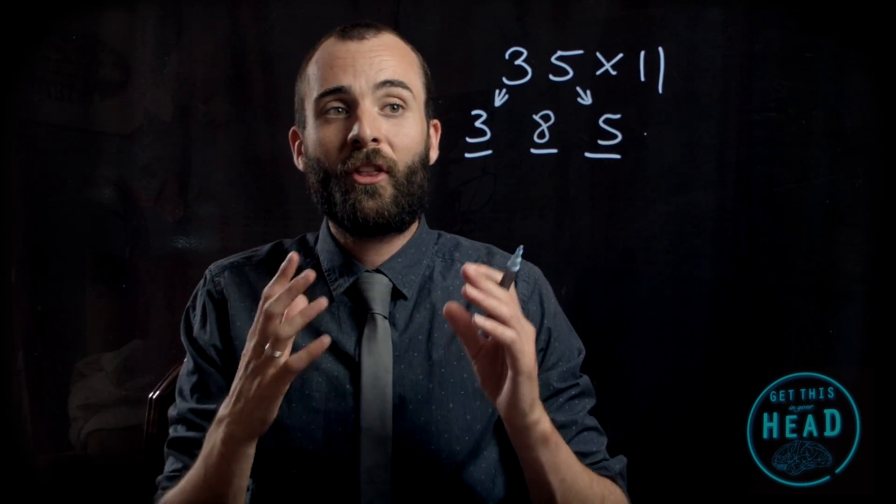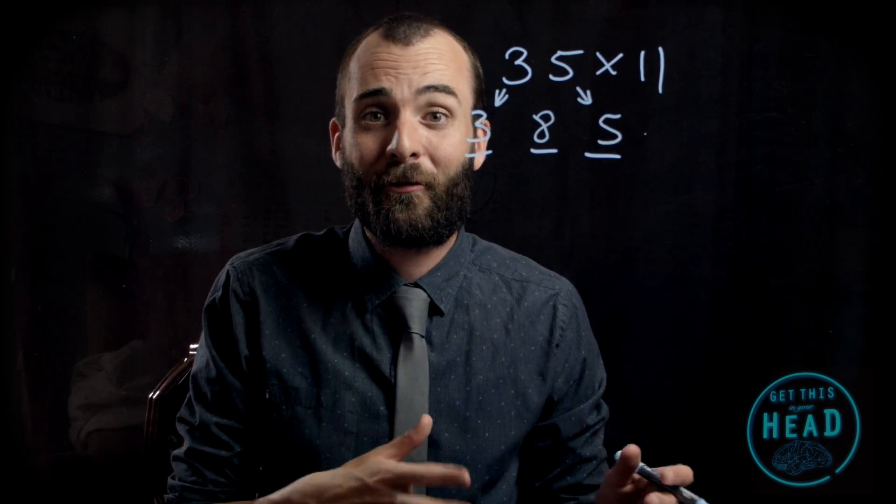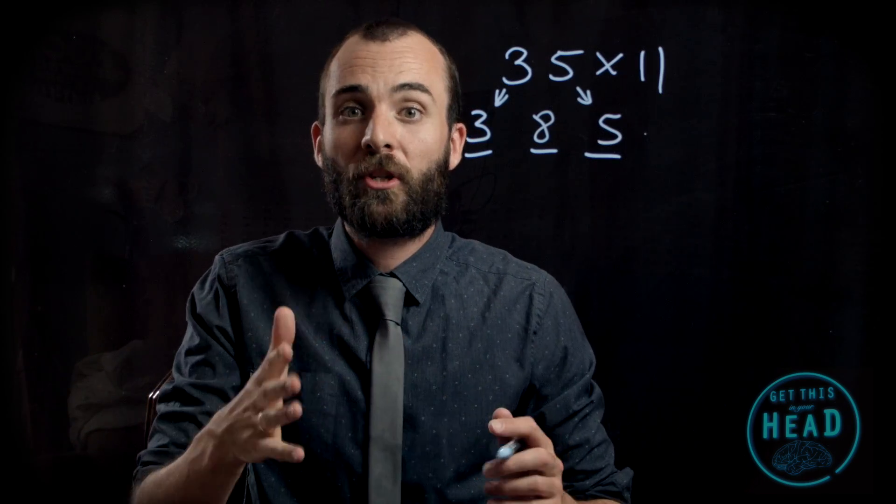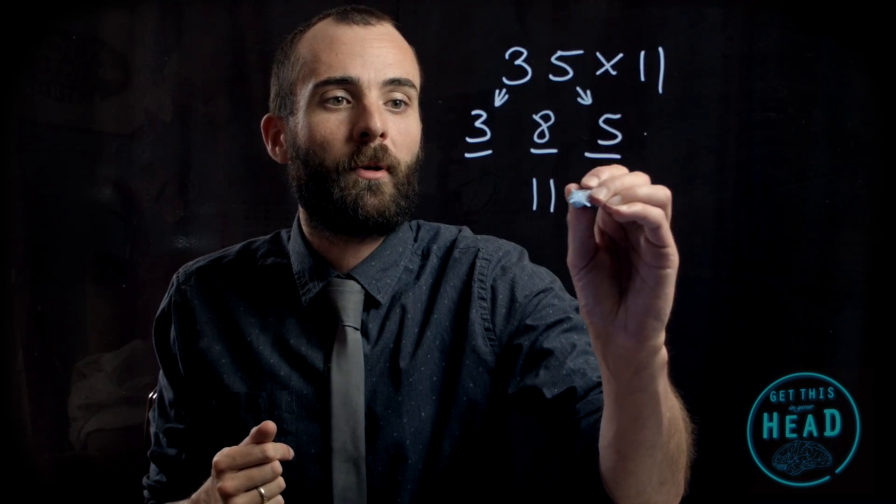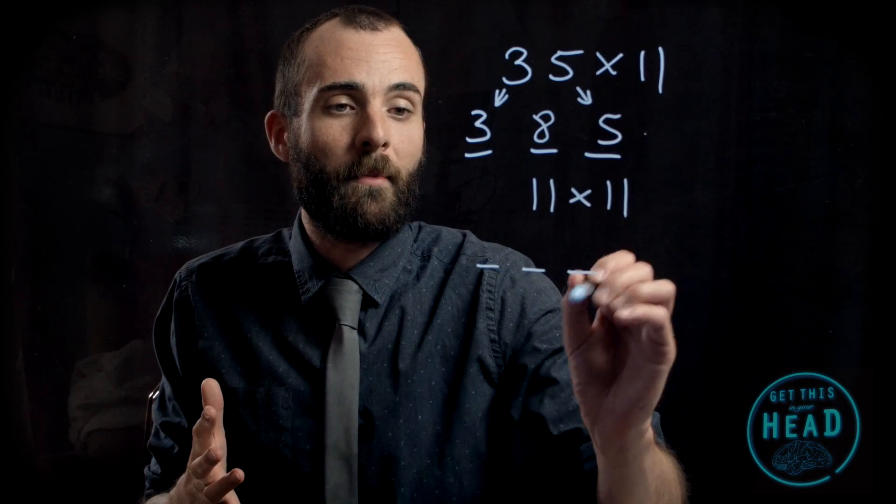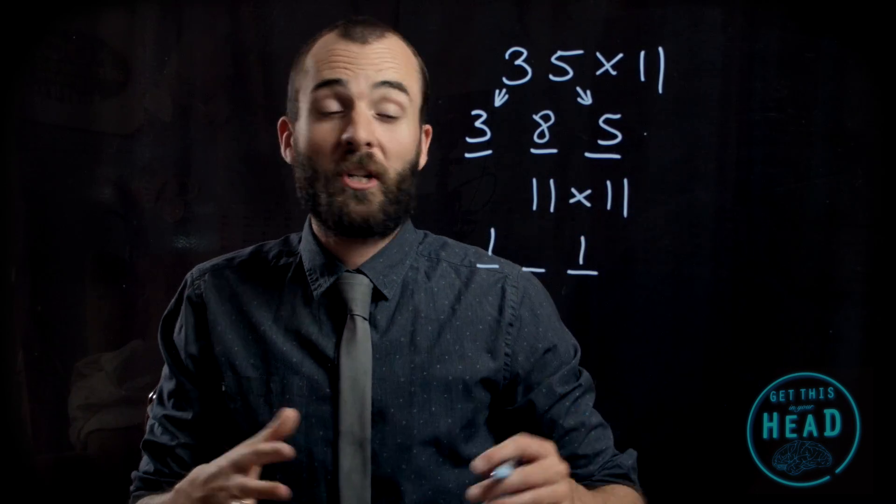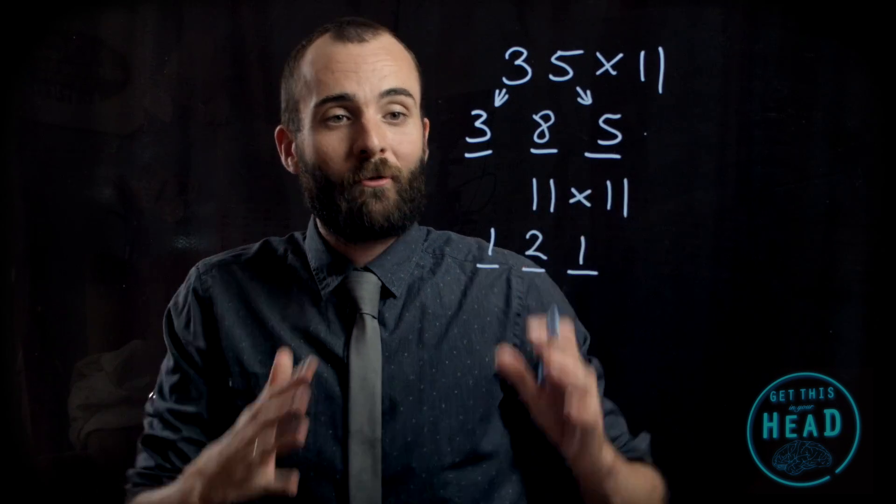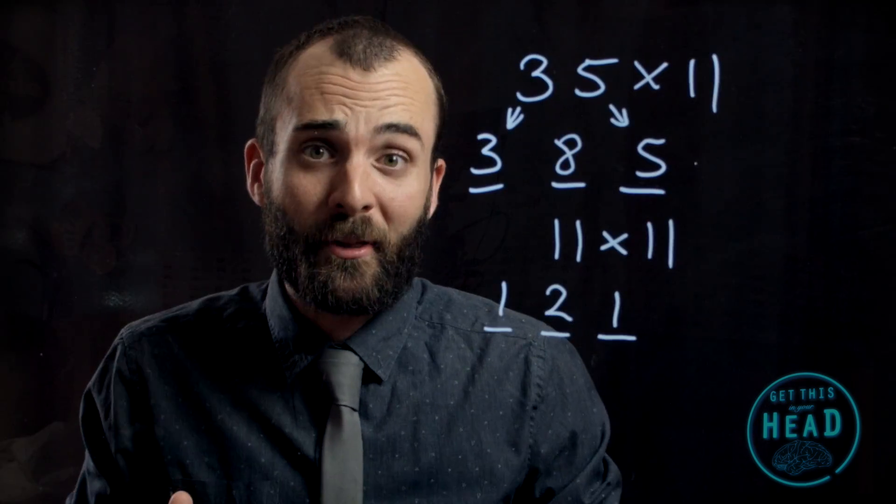Easy, right? Let's try another one that you already know to prove it works. 11 multiplied by 11. Assume that's going to be a three-digit number, so you put the 1 in the first position, the other 1 in the last position, add them together gives us 2 that goes in the middle. Absolutely right: 11 times 11 is 121.